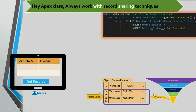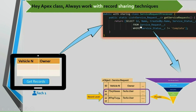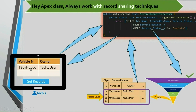We have applied the with sharing keyword to our class. The OWD of this object is private. When tech1 user clicks on get records, it invokes the get service request method. Observe that this class is tagged with the with sharing keyword, so the SOQL respects all the record sharing techniques applied for this user. Hence only one record is returned — because the OWD is private and the accessing user is tech1, only his own record is returned and displayed to him.